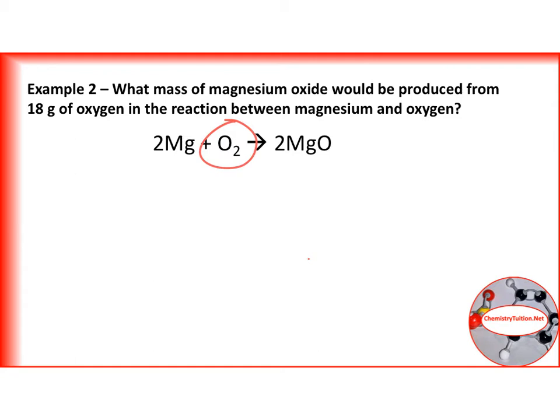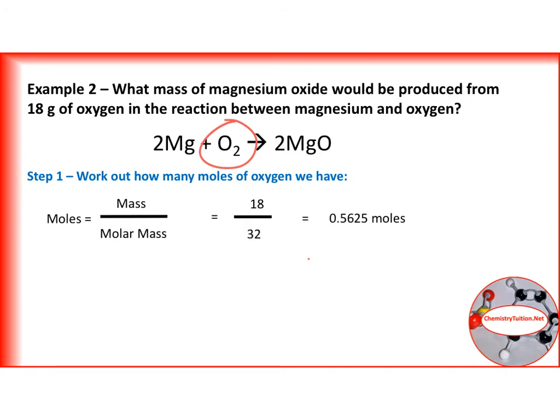So if we do that, you'll remember that the moles is going to be the mass divided by the molar mass, which gives us 0.5625 moles. My mass is, of course, 18 and my molar mass of O2 is 32.